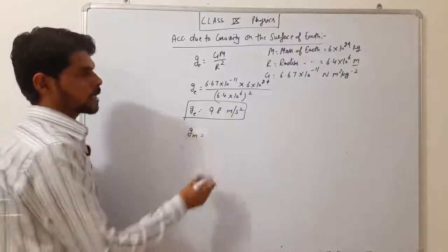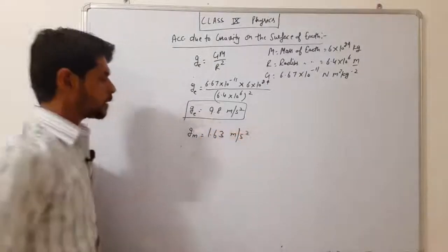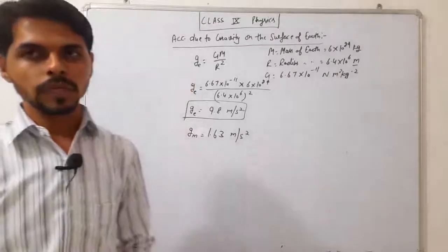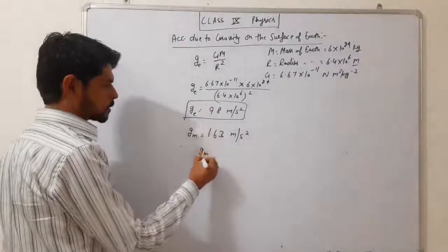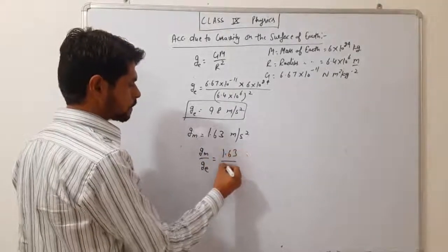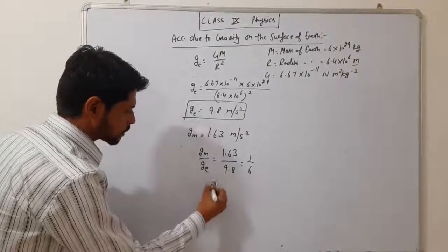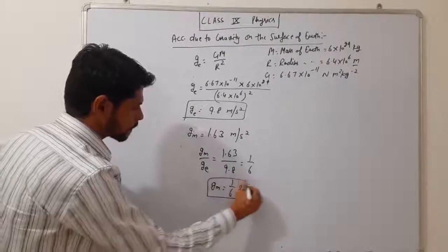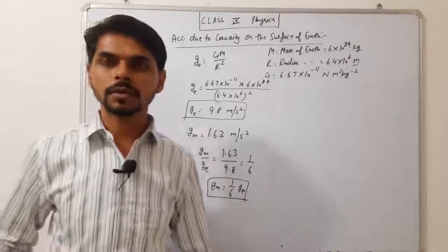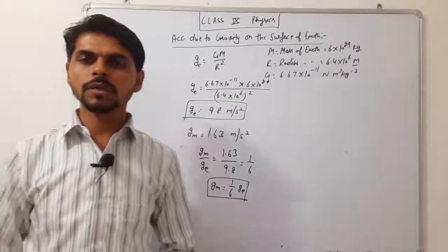अगर यही acceleration due to gravity Moon के surface पे निकालना चाहें, तो यहां mass Moon का होगा और radius Moon की — that is 1.63 m/s². Moon के surface पे acceleration due to gravity 1.63 m/s² है। अगर हम ratio करें, g_Moon / g_Earth = 1/6। इसका मतलब Moon के surface पे acceleration due to gravity, Earth के surface की 1/6 होती है।